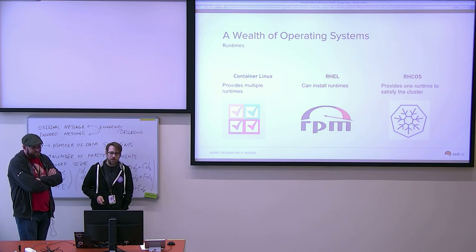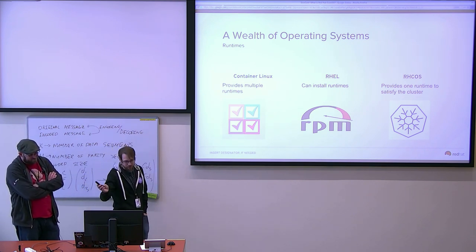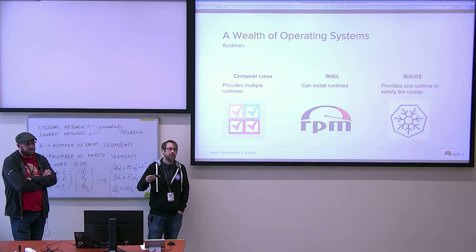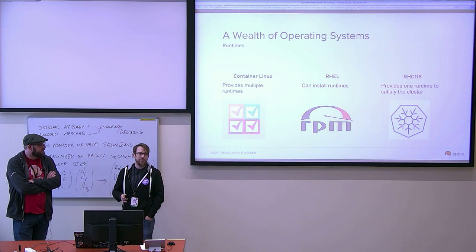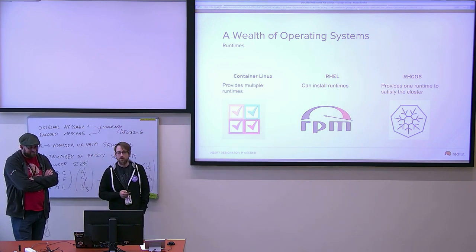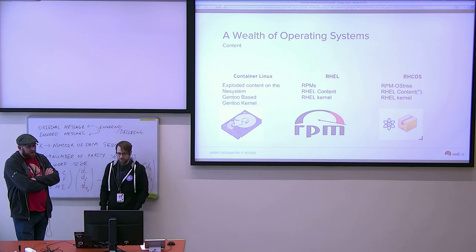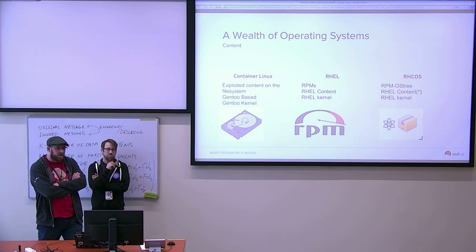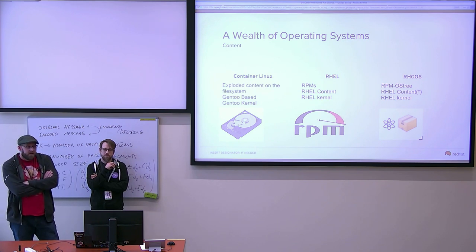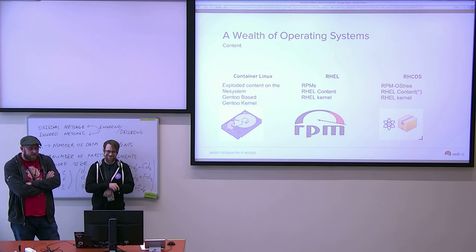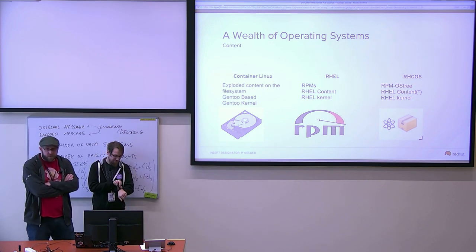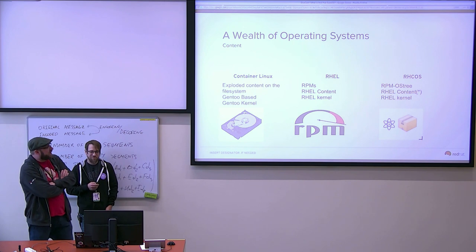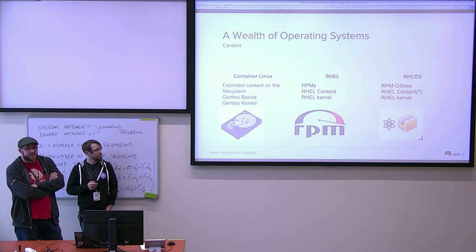Container Linux provides multiple runtimes; RHEL gives you whatever you install. Red Hat CoreOS specifically uses CRI-O, which is an implementation of the CRI — the Container Runtime Interface — meant specifically for Kubernetes and OpenShift, not for other container runtimes. A lot of people love the Gentoo-based kernel and content in Container Linux, but we are a RHEL shop, so Red Hat CoreOS ships with the RHEL kernel, RHEL RPMs, and OpenShift RPMs, managed via RPM OS Tree if additional packages are needed — though generally only OpenShift gets to make that choice.